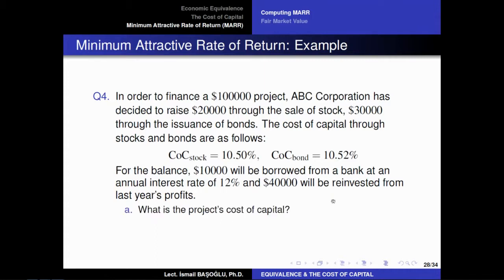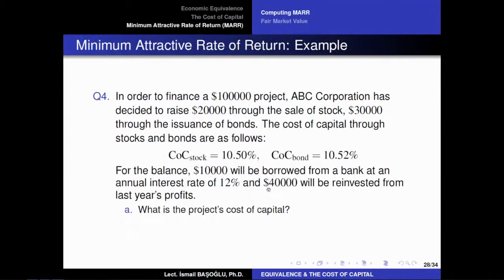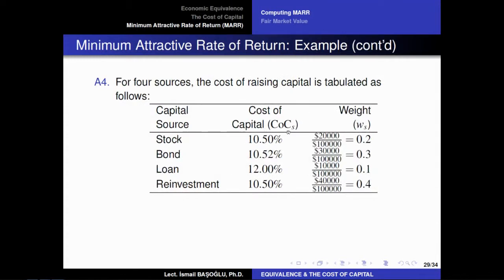The remaining $40,000 will be reinvested from last year's profits. The question asks: what is the project's cost of capital? We know the cost of capital of the $20,000 is 10.5%, the $30,000 is 10.52%, the $10,000 is 12%, and the $40,000 — even though it is their own profit — is not zero. The cost of capital for using their own profits should never be less than the cost of capital of stock. Therefore, we assume the cost of capital for this $40,000 is also at least 10.50%. The cost of capital will be calculated by taking a weighted average.